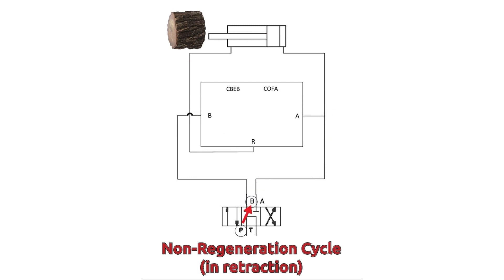Now, this is how the fluid is routed when the log splitter is in retraction. Pressure is routed to the b-port, and then moves to the b-port of the regenerative manifold.